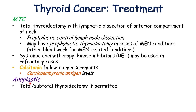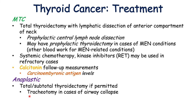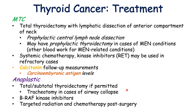For anaplastic thyroid carcinoma, a total or subtotal thyroidectomy can be performed if permitted to help reduce the thyroid mass, especially if there are compression symptoms — since anaplastic is a very rapidly growing aggressive cancer that can impinge on the esophagus and trachea. A tracheotomy may also be required in cases of airway collapse. BRAF kinase inhibitors can be utilized as a BRAF mutation can occur in anaplastic carcinoma. Targeted radiation and chemotherapy can also be used post-surgery.